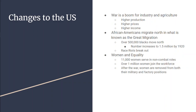What changes did World War I have on the United States? The war was a boom for the economy, both in industry and agriculture. Factory production rises, prices soar, income rises, food is sent to Europe, and job seekers flood cities looking for work. African Americans migrate north in large numbers as U.S. factories rely on them more and more. Over 500,000 African Americans moved north during the war, and as many as 1.5 million had moved by 1920.